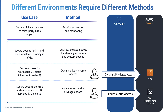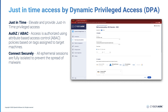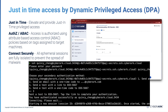This approach grants the user the required privileges to complete their tasks, but only within their allotted access window. By doing so, it maximizes security and minimizes potential risks. The CyberArk Identity Security Platform provides dynamic privileged access, which allows for the elevation and provision of just-in-time privileged access. Access is authorized using attribute-based access control policies based on tags assigned to target machines. This ensures that only authorized users can access specific resources. All ephemeral sessions are fully isolated to prevent the spread of malware, adding an extra layer of protection to the system.